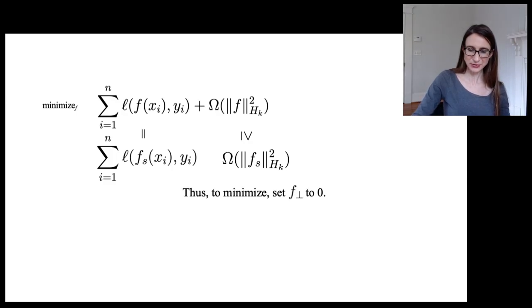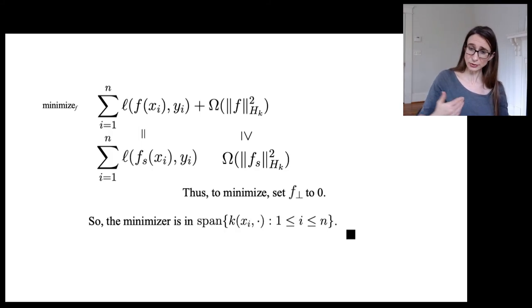And so what that means for us is that if we're trying to minimize that expression on the top there, we should just set f_perp to 0, and that'll actually minimize it for us. So we actually benefit by setting f_perp to 0, and what that means is that f equals f_s. And so because of that, the minimizer is in—the minimizer f_s, that's in the span of those kernels, and that actually is the end of the proof. That's the whole proof of this theorem.